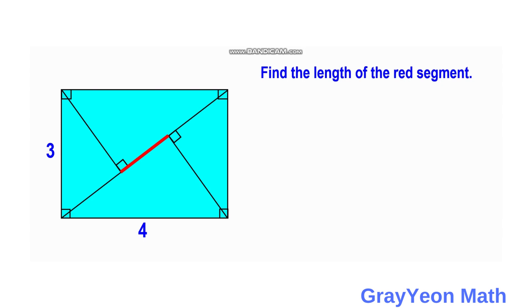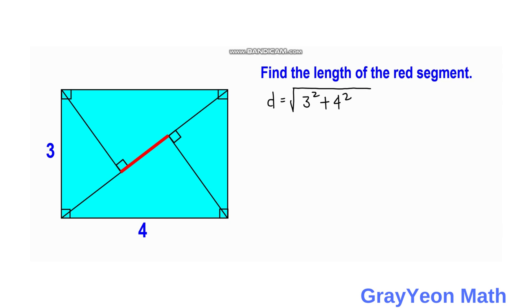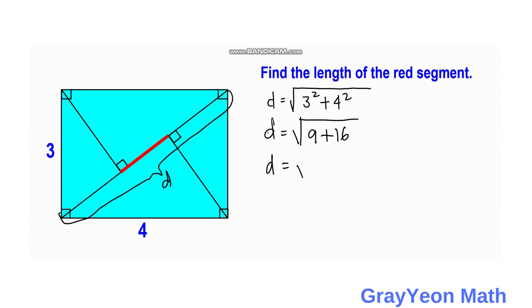The first thing to notice is that this is a rectangle with a diagonal formed by its sides. That diagonal is the hypotenuse of a right triangle. Let us call the diagonal D. So D is equal to the square root of 3 squared plus 4 squared, which gives us the square root of 9 plus 16, or the square root of 25. So D is equal to 5.